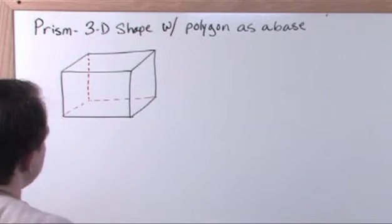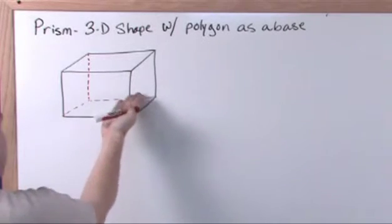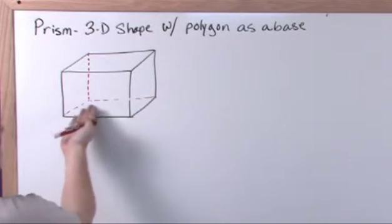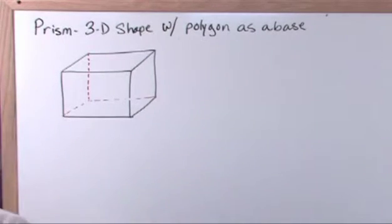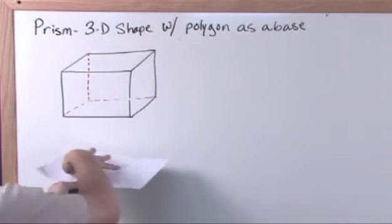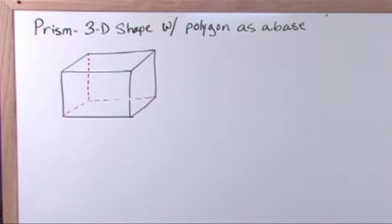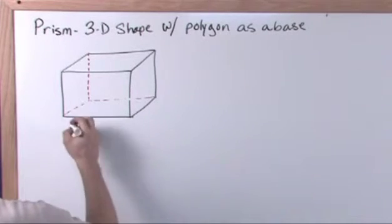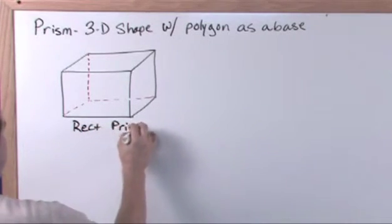So this is a rectangular prism. We've talked about that before in the last section. And it satisfies this definition because it's a 3D shape and that makes sense. It has a polygon as a base. In this case the base of it, the polygon, is a rectangle. You can kind of think about that in terms of it being a box or like a sheet of paper that you kind of made into a three dimensional shape. The bottom is a rectangle. So this is a rectangular prism.